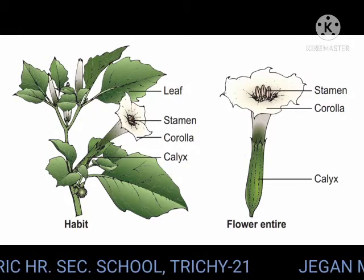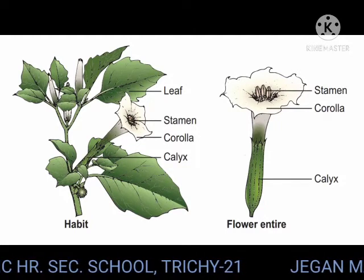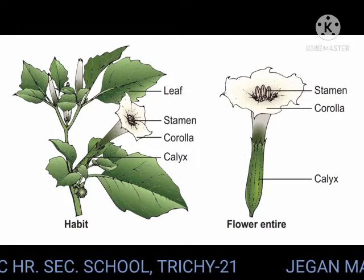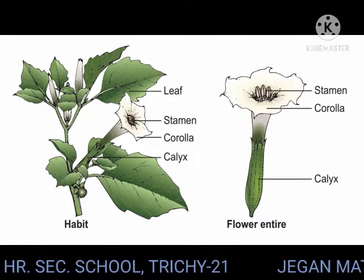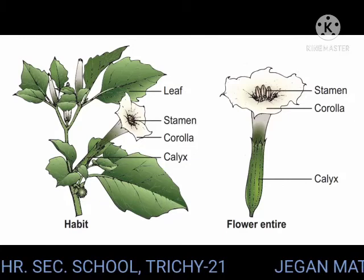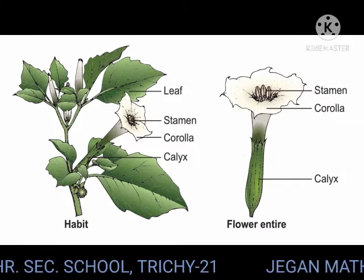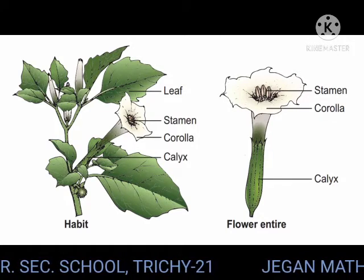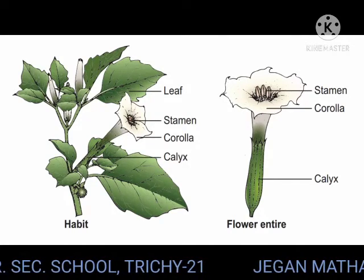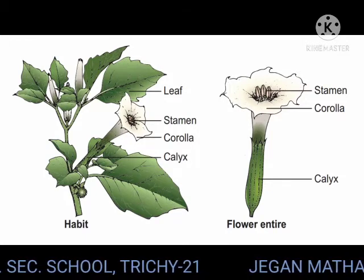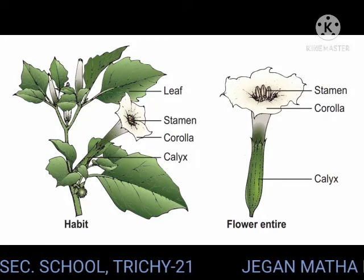Leaf: simple, alternate, petiolate, entire or deeply lobed, glabrous, exstipulate, showing unicostate reticulate venation. Exstipulate means it is not having stipules. Unicostate means it is having one prominent midrib, so it is called unicostate reticulate venation.